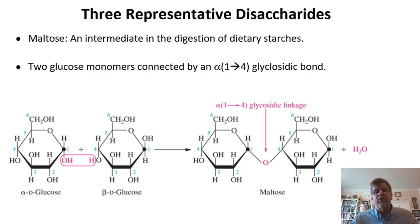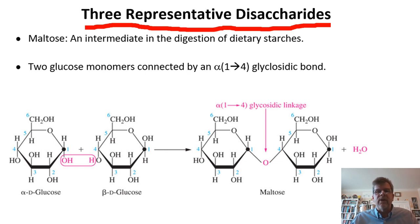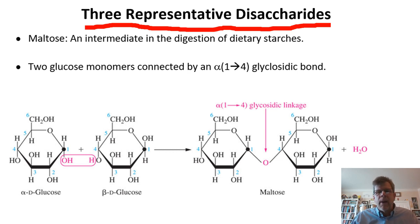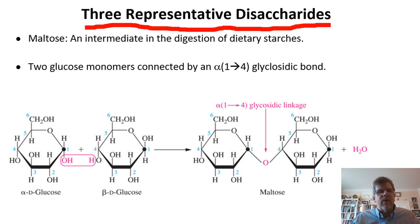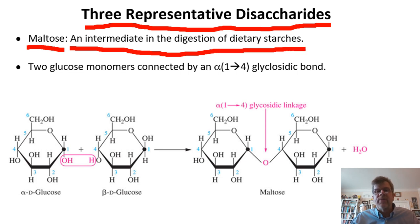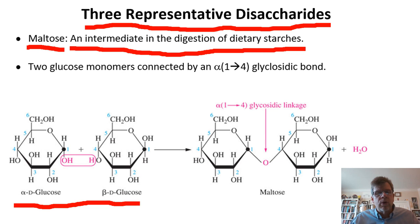We find ourselves looking at three representative disaccharides. The word 'representative' means: can you pick one of these structures out of a lineup? We did this with monosaccharides — telling glucose from galactose, from fructose, from ribose. We'll do the same with disaccharides, though there are only three representative ones out of the hundreds we could put out there. Our first representative disaccharide is known as maltose, an intermediate in the digestion of dietary starches. Maltose is connected through two glucose monomers — two of the same monosaccharide.